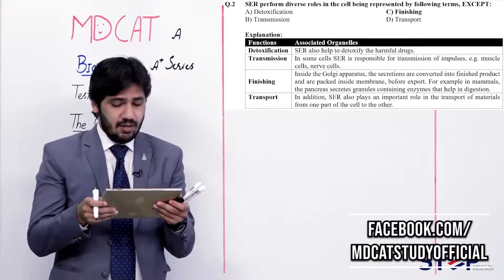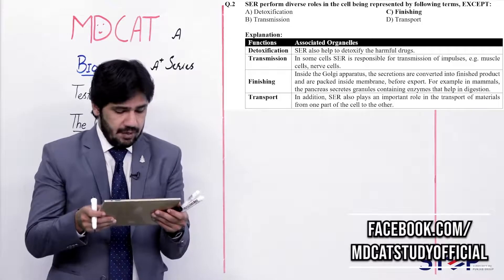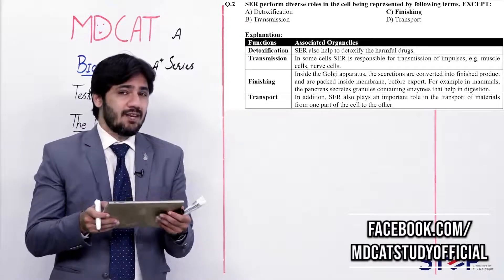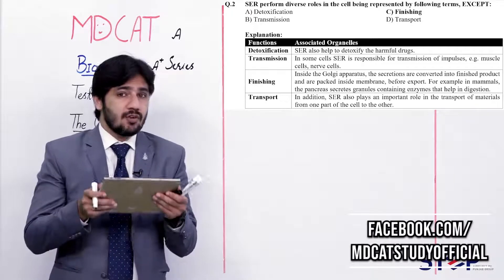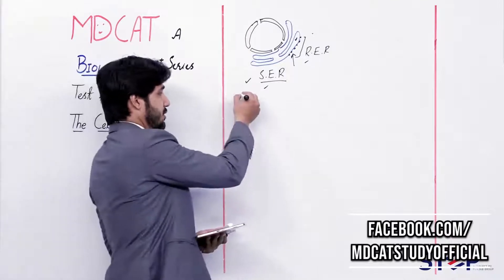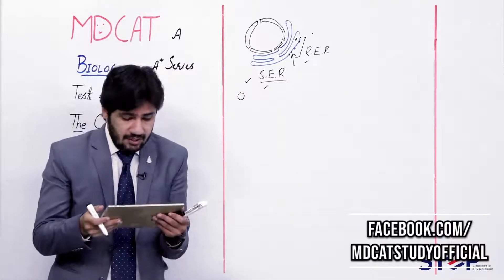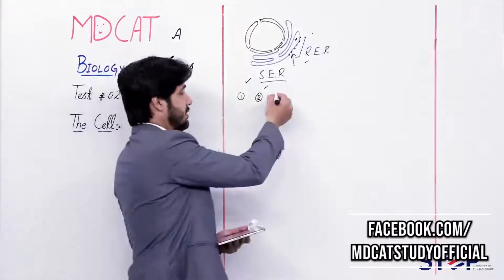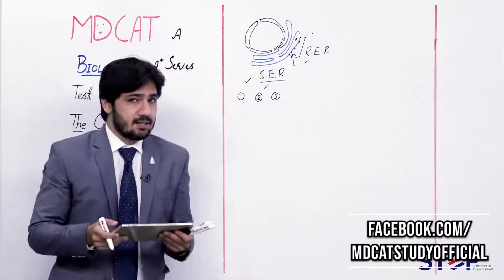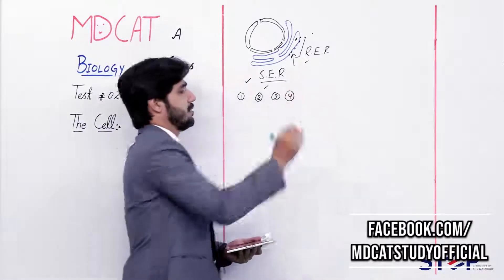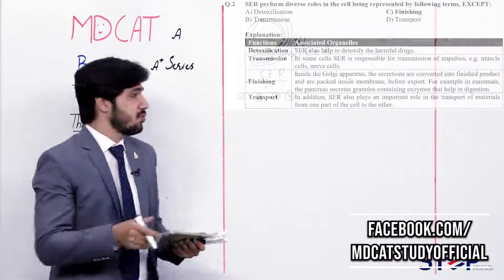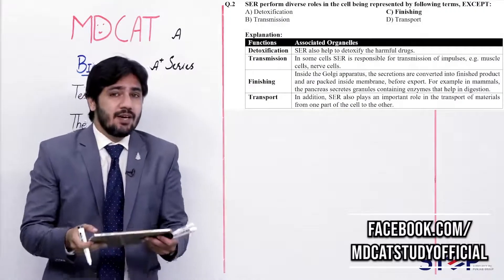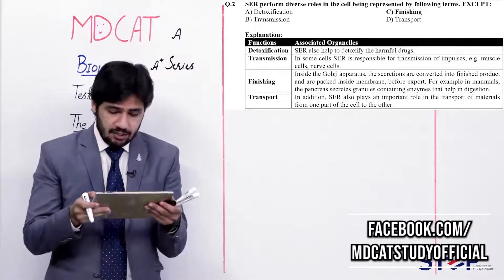Question 2: SER performs diverse roles in the cell, represented by the following terms except — (alpha) detoxification, (beta) transmission, (charlie) finishing, (delta) transport. SER functions include impulse transmission (beta), detoxification (alpha), transport (delta), and lipid metabolism. However, 'finishing' is the function of the Golgi apparatus, not SER. The question asks for the exception, so the right answer is charlie — finishing.